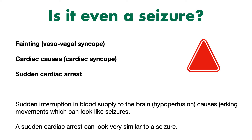A cardiac cause could be, for example, an abnormal heart rhythm. When the patient suddenly flips into this abnormal heart rhythm, they collapse to the floor and lose consciousness, and the sudden interruption in blood supply to the brain causes these jerking movements that can look similar to a seizure. Finally, it's important to remember that a sudden cardiac arrest can also produce seizure-like activity in the seconds to short minutes following the cardiac arrest. In some cases, bystanders and first responders may not recognise that a cardiac arrest has occurred and instead believe the patient has had a seizure.